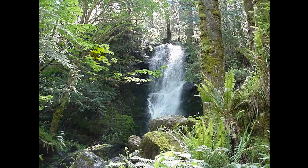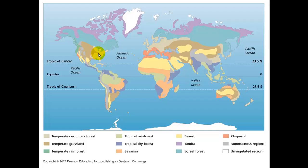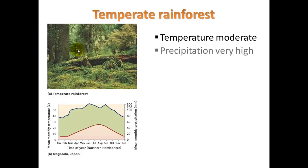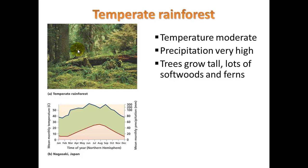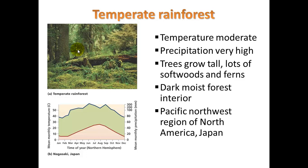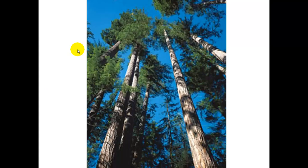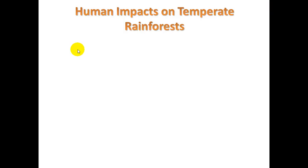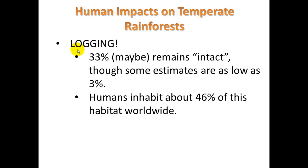Temperate rainforest, moving toward the Pacific Northwest. Temperature is moderate, precipitation is very high. Trees grow tall — lots of softwoods and ferns, dark and moist forest interior, so there's a bit of competition for light. We find this in the Pacific Northwest region of North America and in Japan. Human impacts: definitely logging. Perhaps 33% remain intact, though some estimates are as low as 3%. Humans inhabit about 46% of this habitat worldwide.